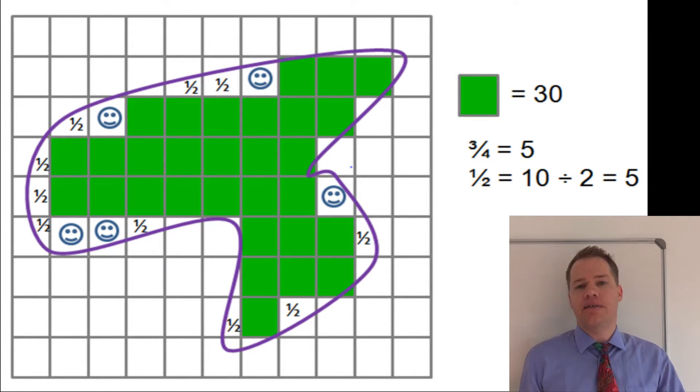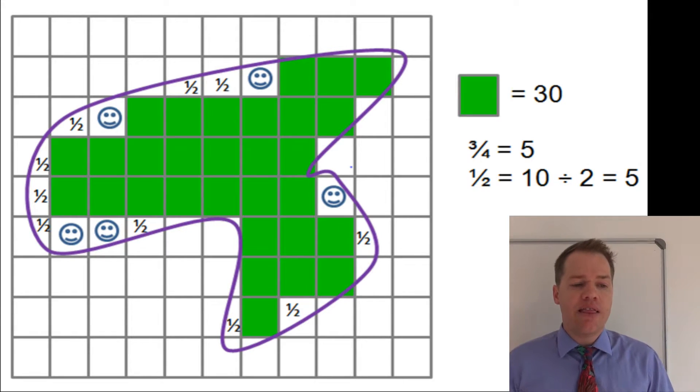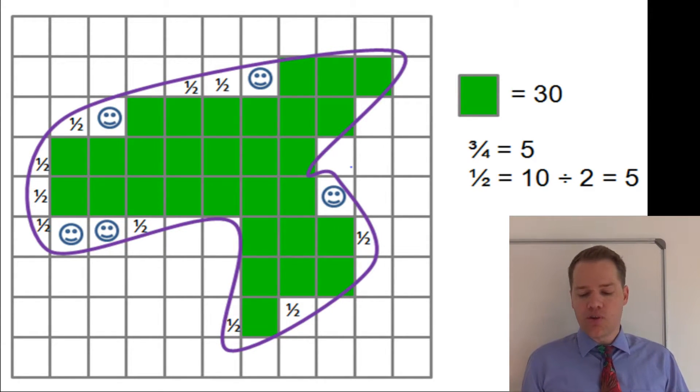So if you count all the half squares, it will give you a total of 10 half squares. Now obviously 10 half squares would be five full squares, so that's why we get to a total of five.